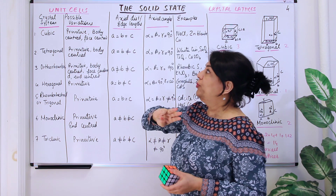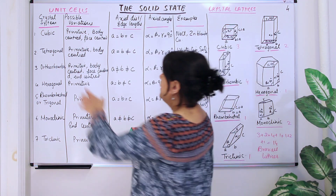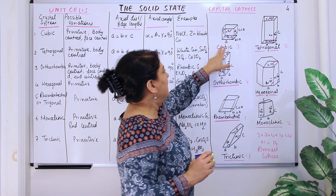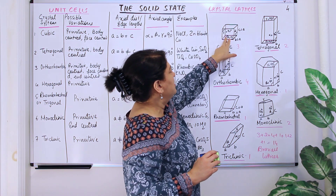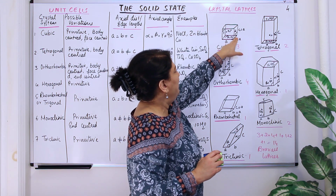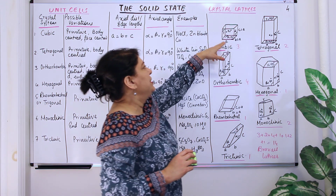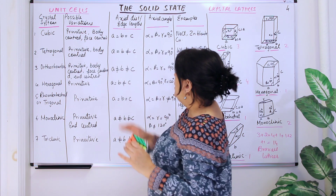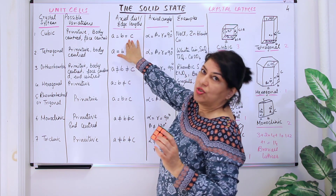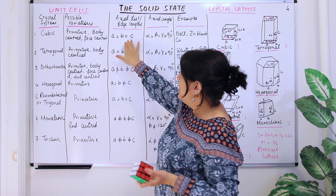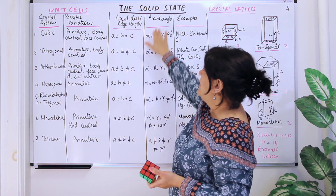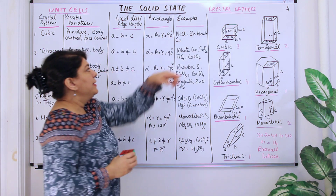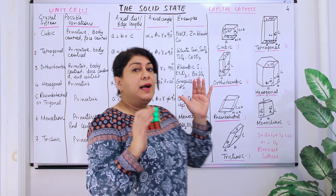So there are three possible cubic Bravais lattices. For a cubic unit cell, the axial distances or edge lengths are: a is equal to b is equal to c, and all three angles — alpha, beta, and gamma — are 90 degrees. Examples of cubic lattices are sodium chloride, zinc blende, and copper.